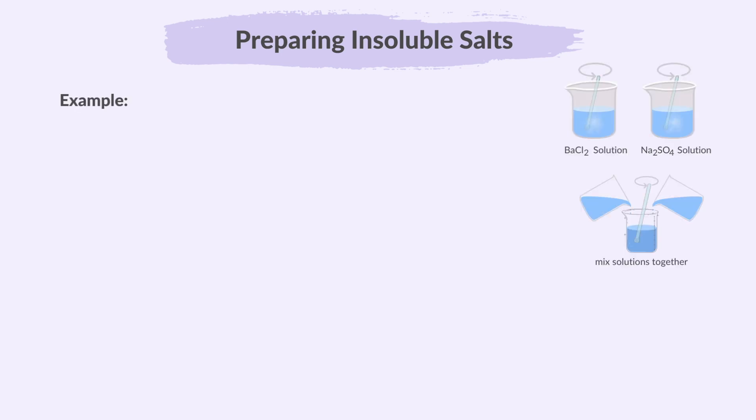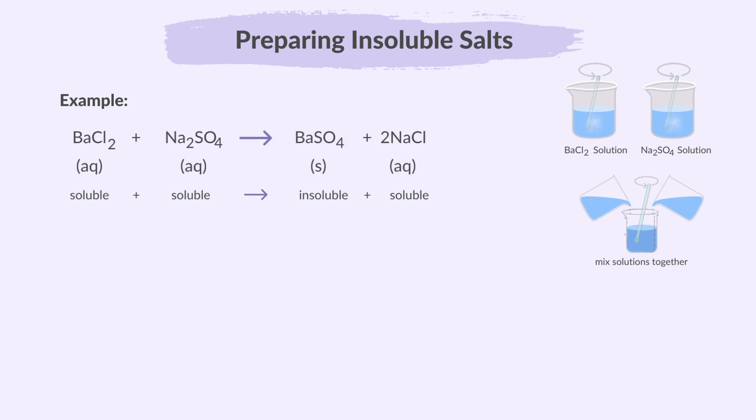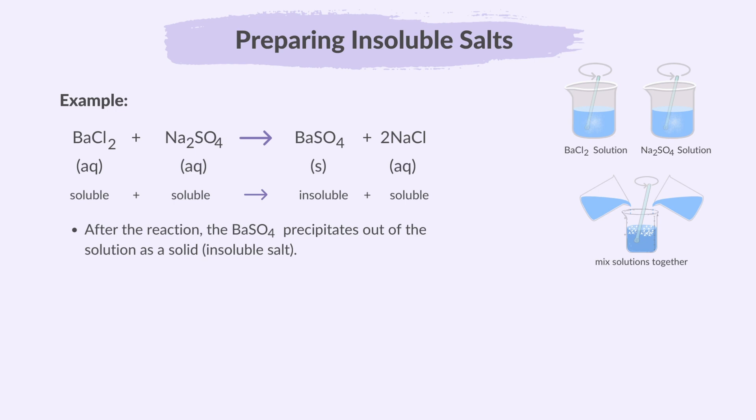For example, if you want to make barium sulfate, which is an insoluble salt, you can mix solutions of barium chloride and sodium sulfate. In this reaction, barium chloride reacts with sodium sulfate to produce barium sulfate and sodium chloride. After the reaction, the barium sulfate precipitates out of the solution as a solid.